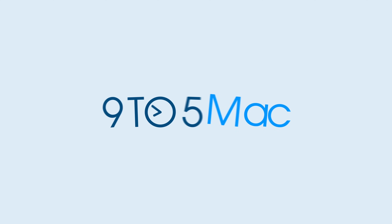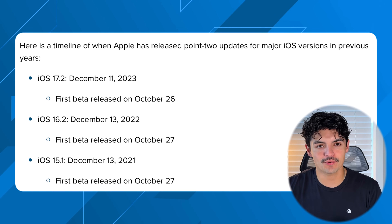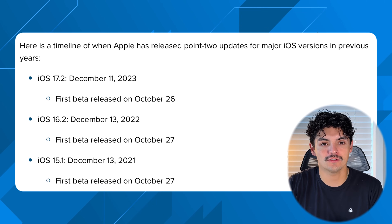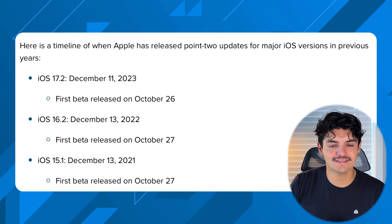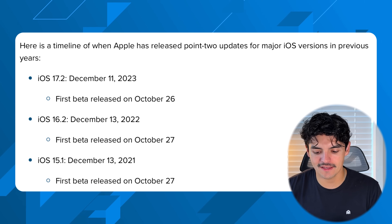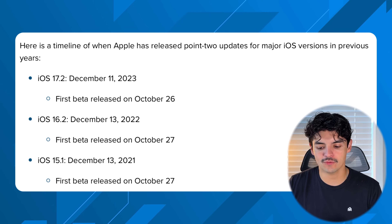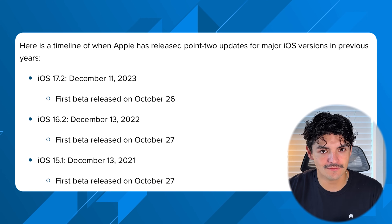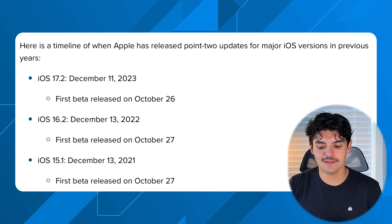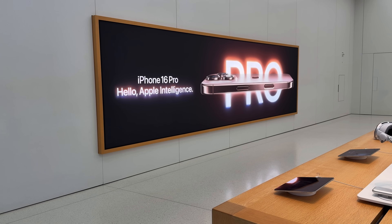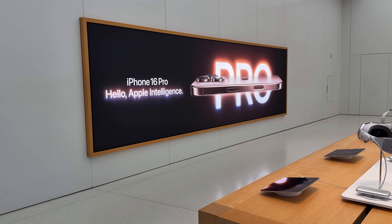In terms of when to expect 18.2, looking back at previous years, Apple released their point-two update in mid-December. iOS 17.2 was December 11th, 2023; 16.2 was December 13th, 2022; and 15.2 was December 13th, 2021. Continuing that pattern, we should be getting 18.2 sometime in December — and that's when Apple is really going to start flexing their muscles with Apple Intelligence features.